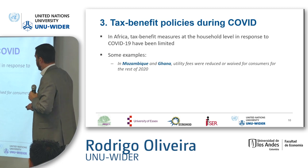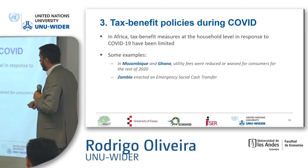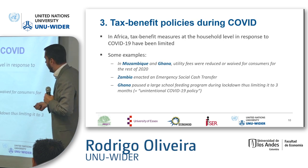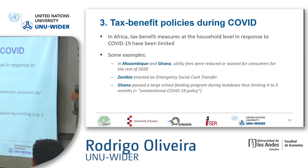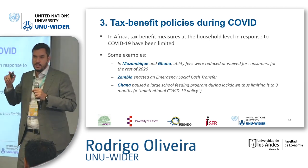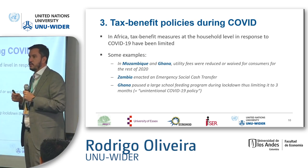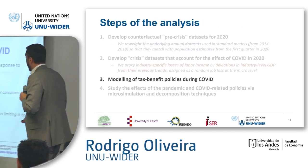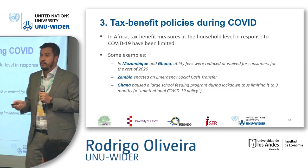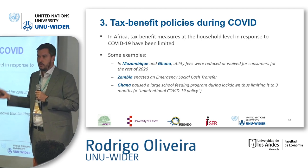In Mozambique, the main response was reducing utility fees like water and electricity. In Zambia, they created an additional cash transfer program. In Ghana, they paused a large social feeding program during the lockdown — essentially a negative social protection policy, taking away one of the main supports in the country. In Uganda and Tanzania, we didn't have any relevant policy in 2020, so we don't model any policy for those countries.